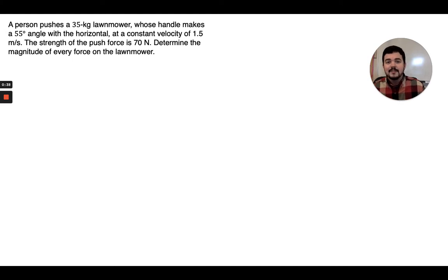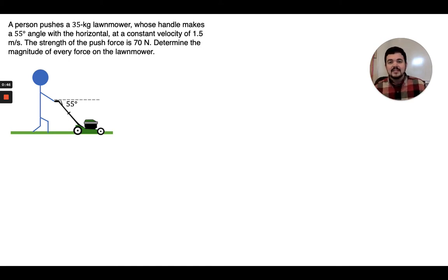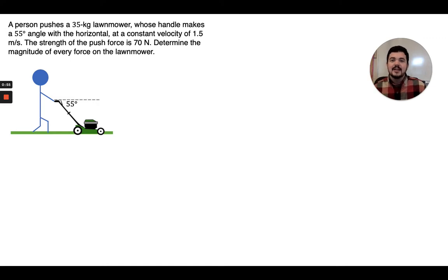The starting point with all physics problems is to draw a sketch, which is what I've done here. Here is my sketch of a person pushing a lawnmower, and we can see that I've drawn in the 55 degree angle that the lawnmower's handle makes relative to the horizontal, which means relative to that gray dashed horizontal line.